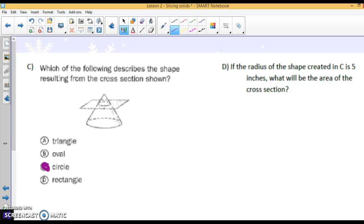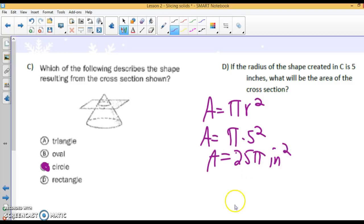Now, if the radius created by the shape in C is 5 inches, what will the area of the cross-section be? Well, we've decided that our cross-section is a circle. So pi r squared, which is the formula we would use to find the area of the cross-section. So pi times 5 squared is either 25π written exactly, inches squared. Or if you put 3.14 in, it's going to be 78.5 inches squared.